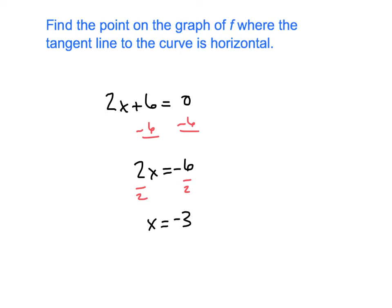That's the x-coordinate of the point. Well, they want us to find the point. So we also need the y-coordinate. And since y equals f of x, I'm going to plug negative 3 into the original function. So that would be negative 3 squared plus 6 times negative 3. So that looks like 9 minus 18, which is negative 9.